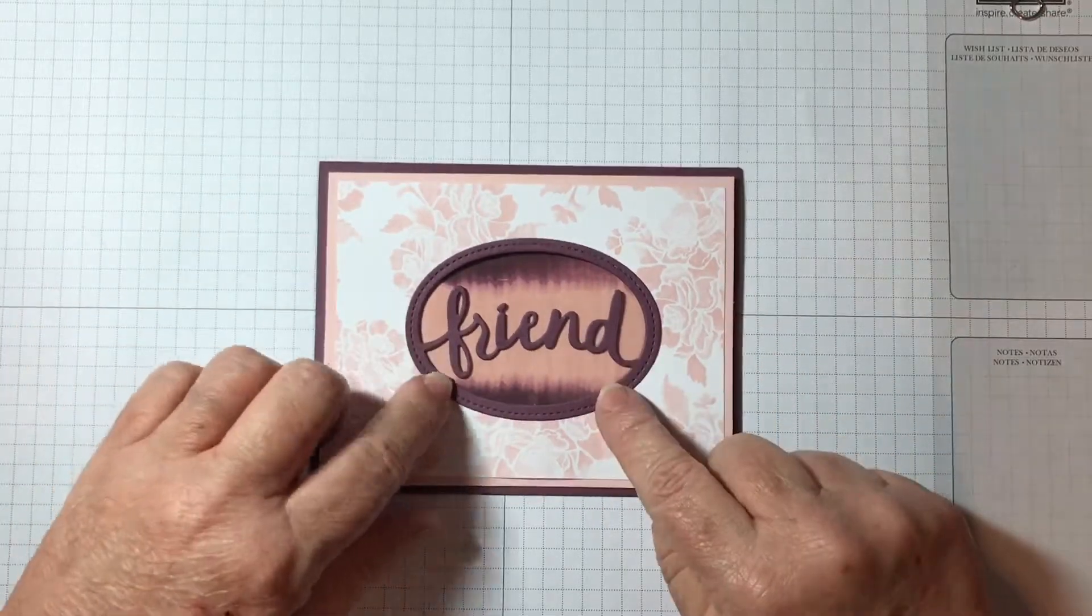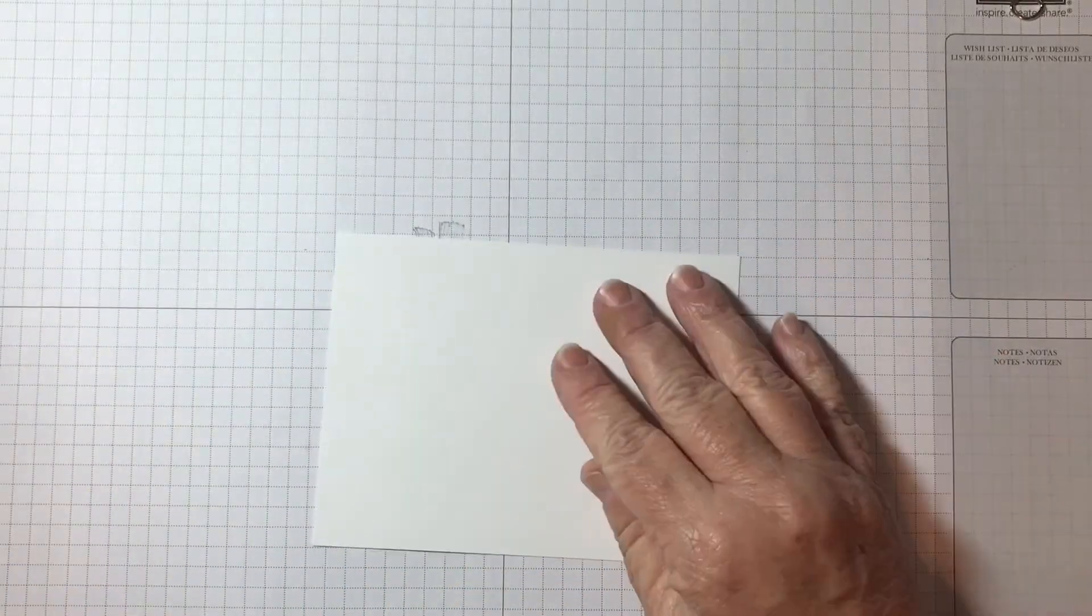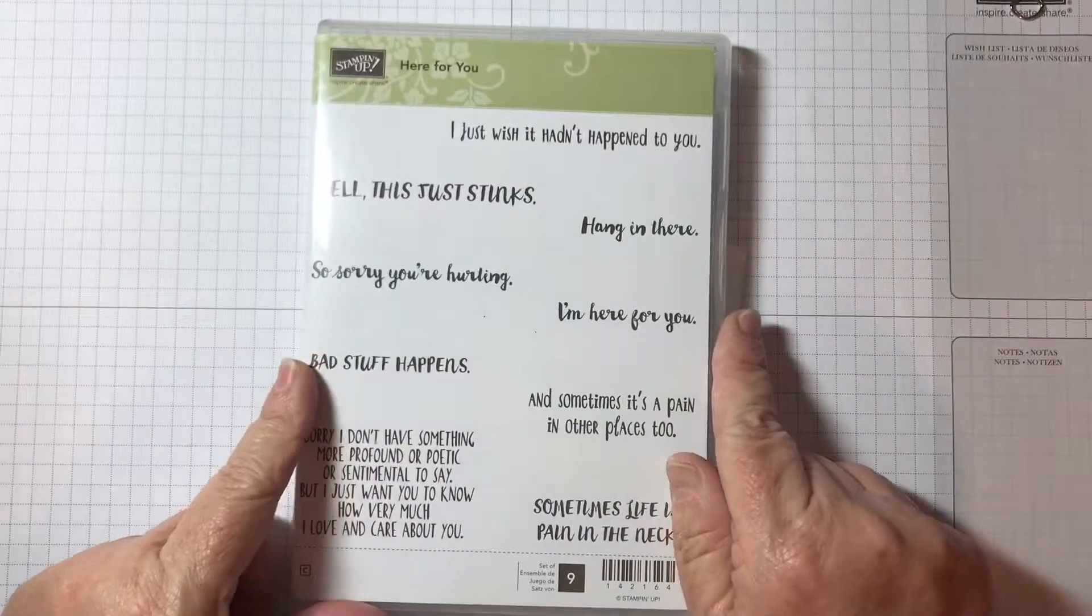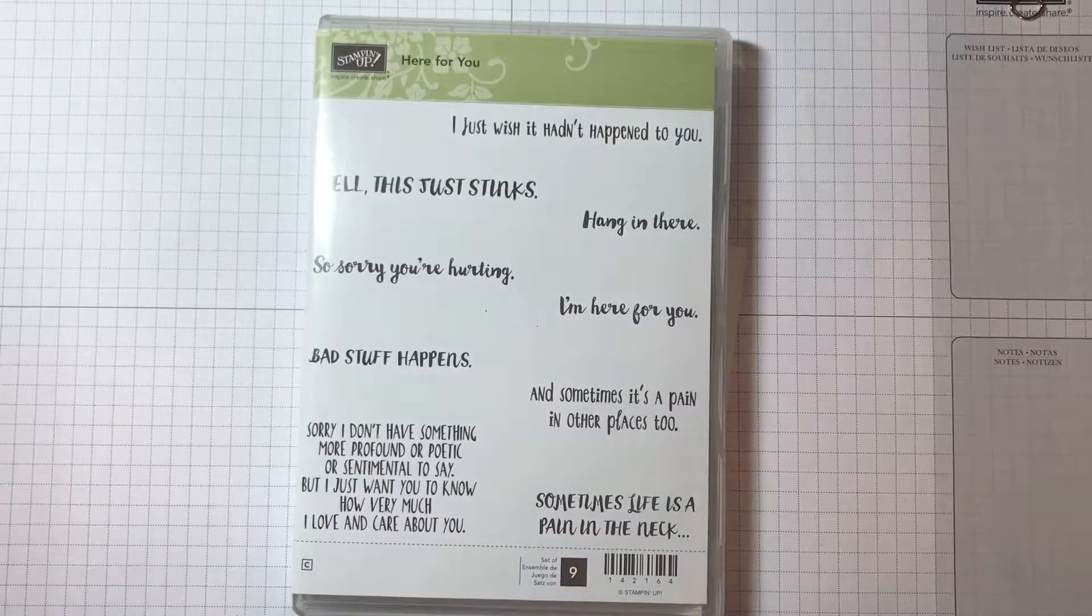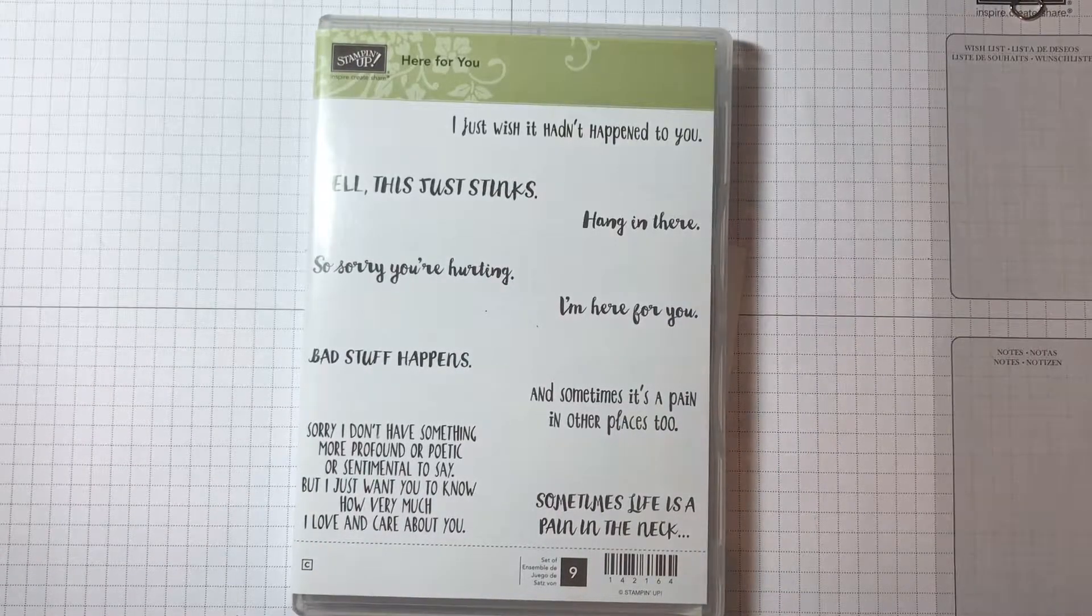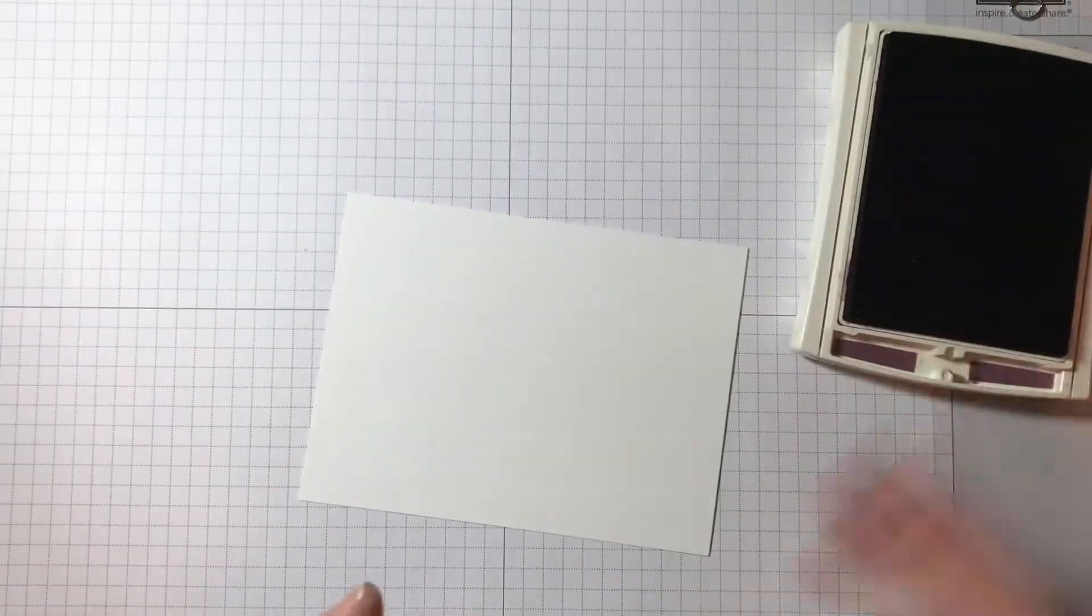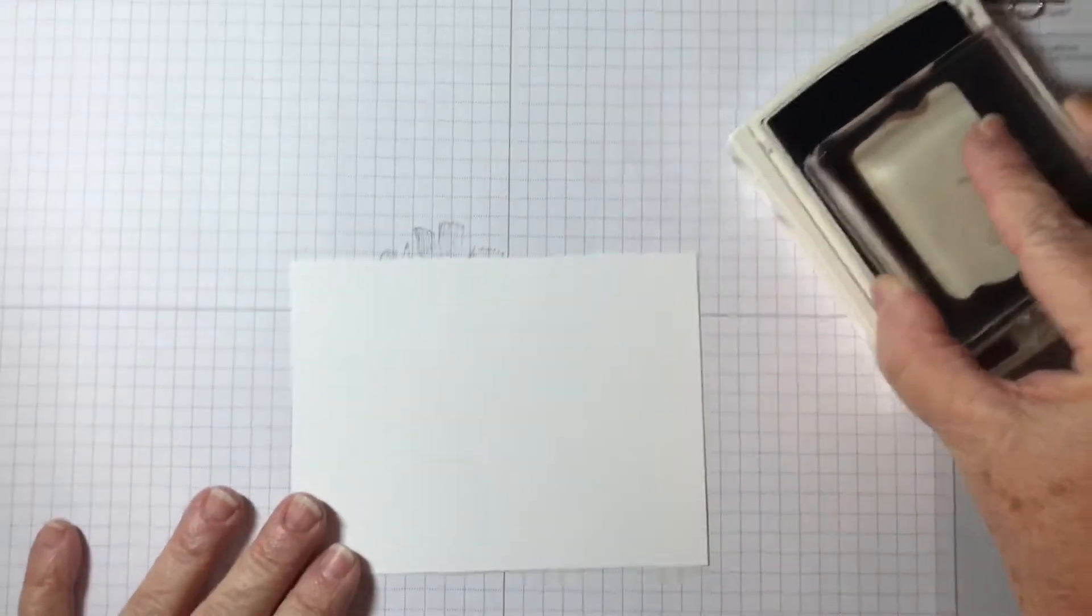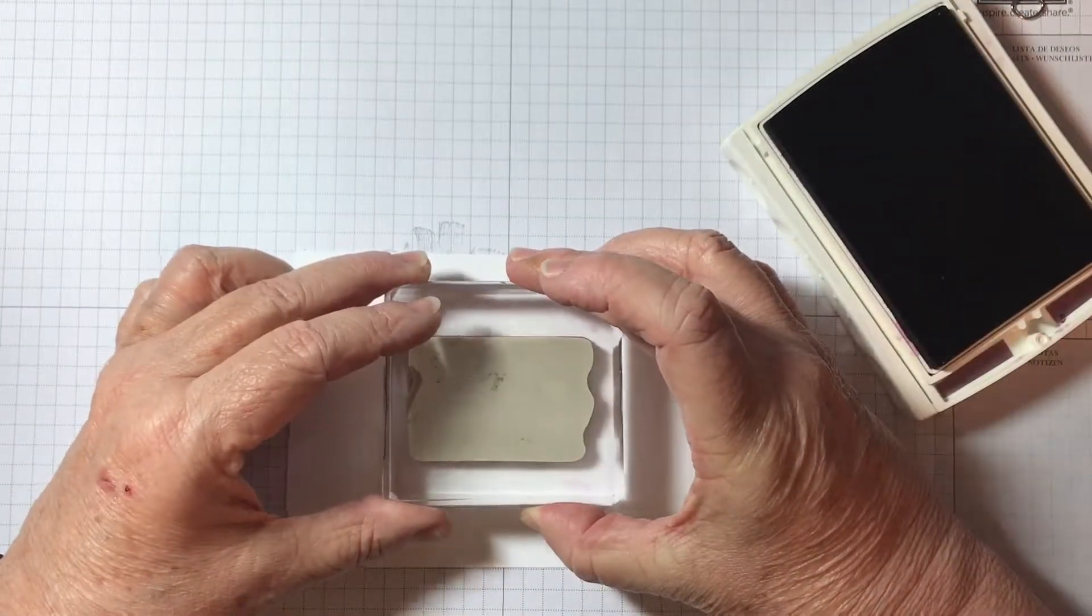For the inside of the card, I'm using whisper white and a word set from Here For You. This set has all the right words that you're going to need. I'm going to stamp it with fresh fig.